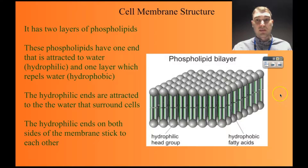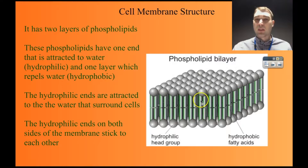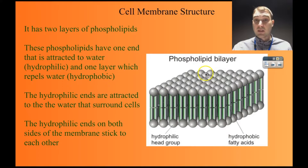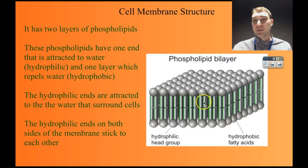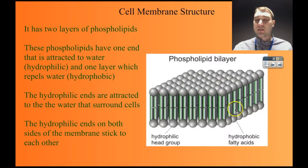Let's look at the cell membrane structure. The structure is called a phospholipid bilayer. A phospholipid has one end that's hydrophobic, which doesn't like water, and one end that's hydrophilic, that does like water. The hydrophilic ends point out towards the outside and inside of the cell, since there's water on either side. The hydrophobic ends point towards each other because they're attracted to each other — they both don't like water. This is called a phospholipid bilayer, and it makes up the majority of the cell membrane.